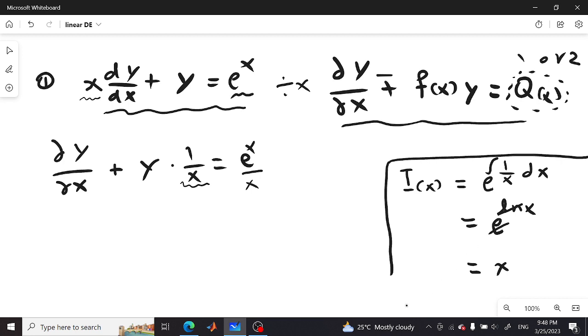Now we multiply the integration factor with our formula. So we get x(dy/dx) plus y equals e^x. Now if you notice, we have the same formula as we did at the start. This is always a rule. The final answer is always I(x), which is the integration factor, multiplied by y equals the integral of Q(x).